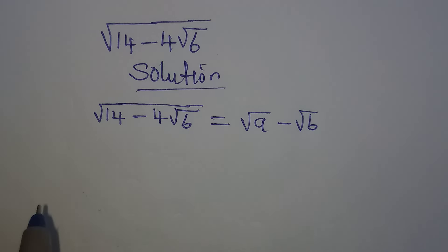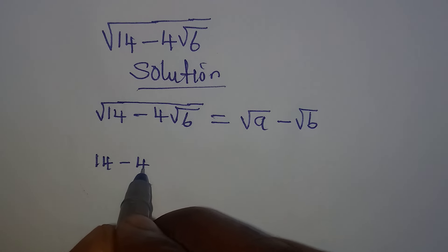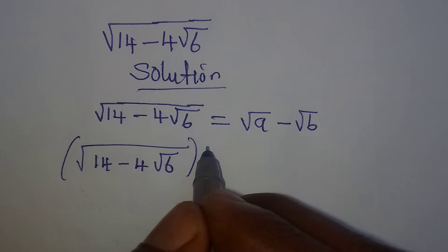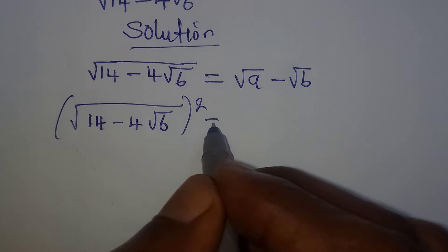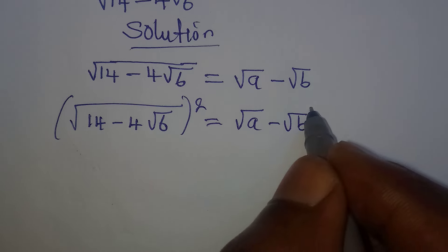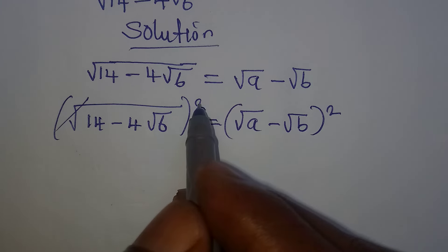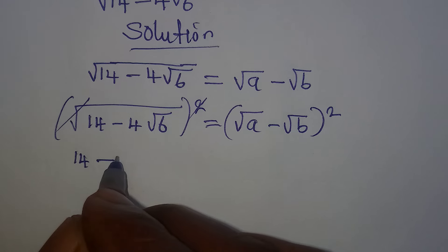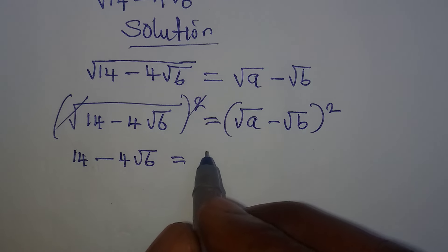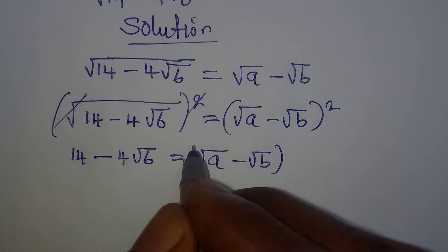The next step will be for me to square both sides. Remember it was a square root, so we can square this, and when we do that this will also be squared. We have square root of a minus square root of b, and this is squared. Now the square roots will be gone, so that's 14 minus 4√6 will be equal to square root of a minus square root of b, squared.